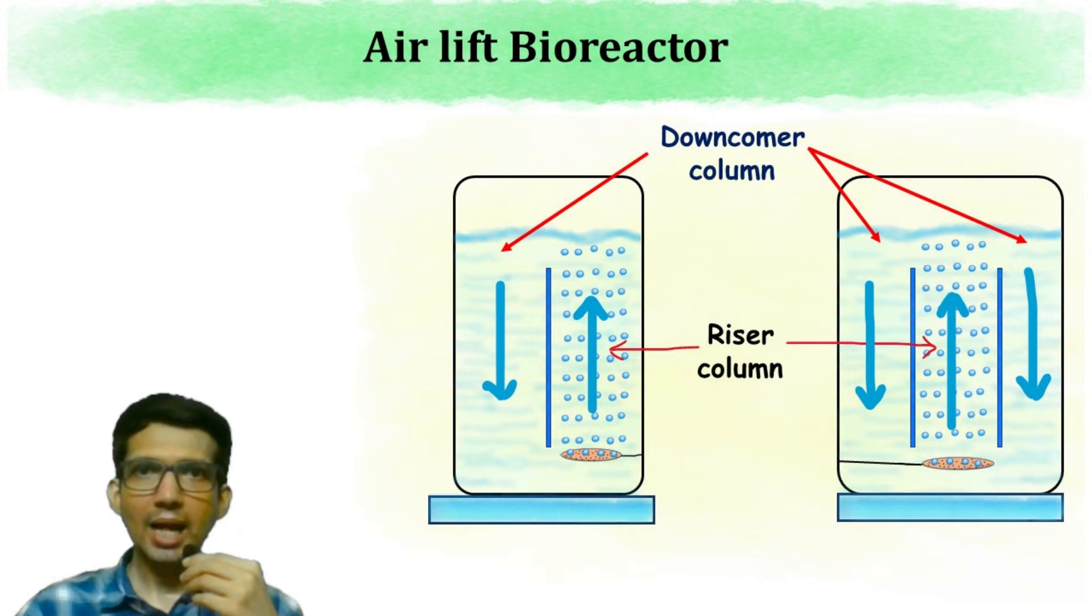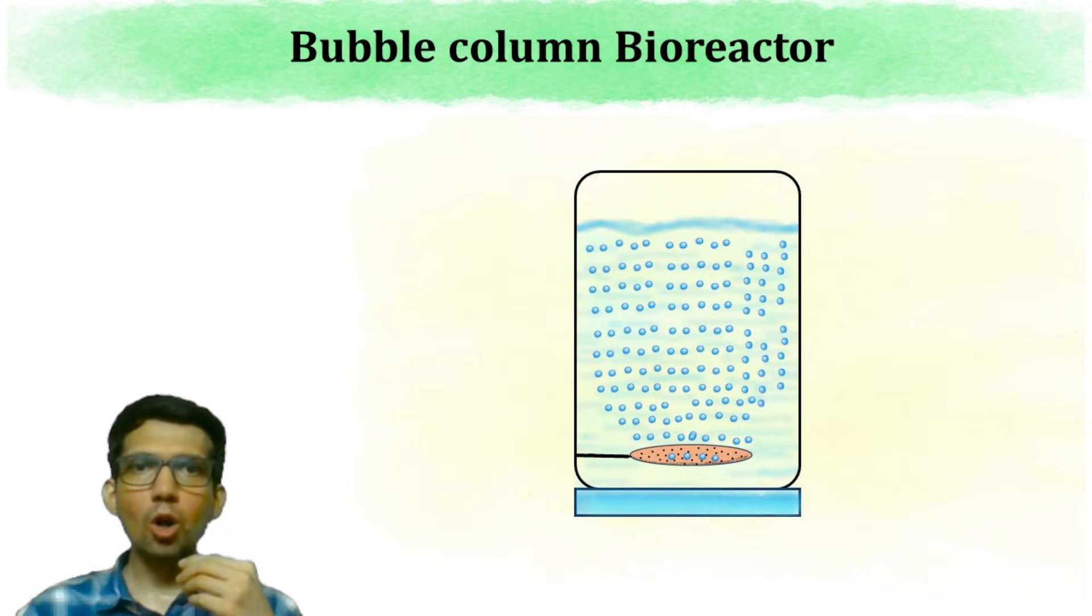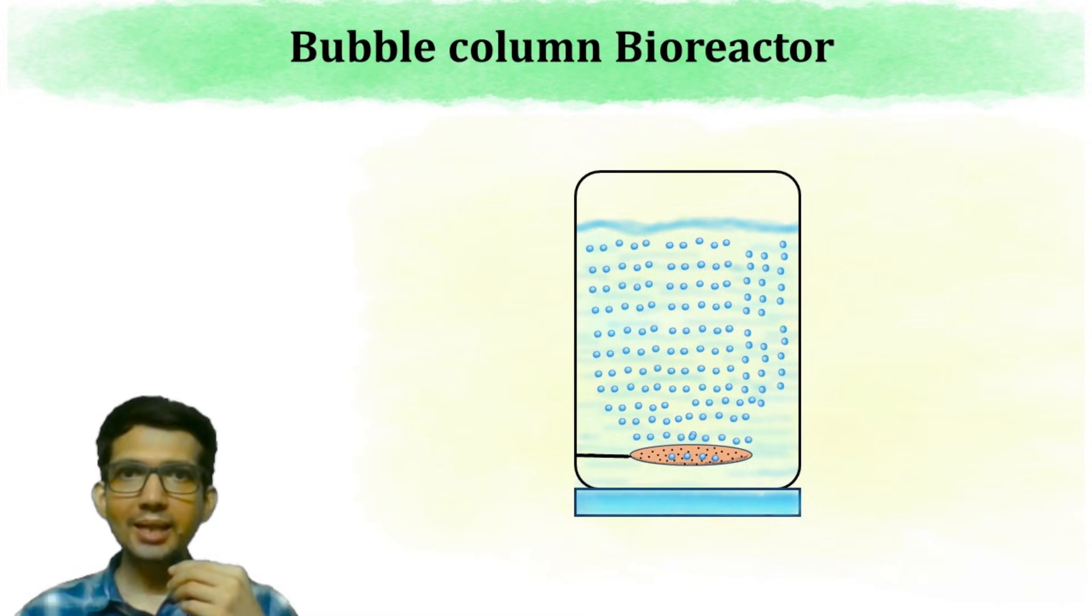Then we have bioreactor which is known as Bubble Column Reactor. This is a simplified version of Air Lift Bioreactor. In this, we do not have the riser and the downcomer column. Instead, the whole cylindrical column has a sparger at the bottom. When the air bubbles are introduced, as the bubbles move up, everything in the bioreactor gets mixed.